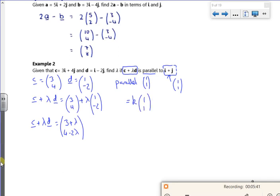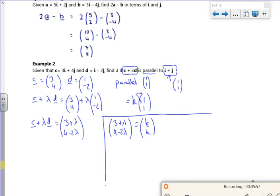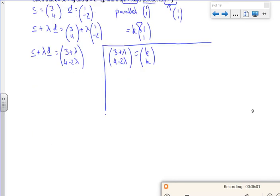So what I'm saying is, I'm going to put them equal to it. So my 3 plus lambda, and my 4 minus 2 lambda, is going to be equal to (k, k). Because what I want is just a number. Suddenly this has just got very hard.